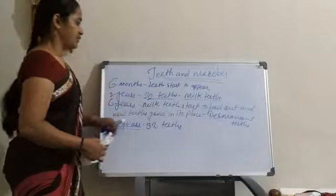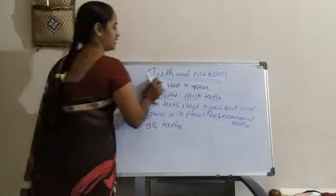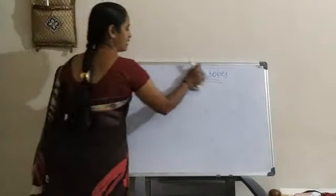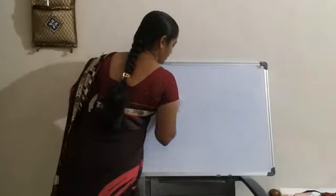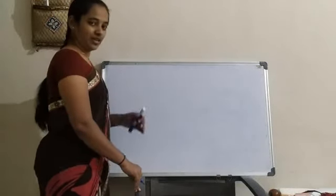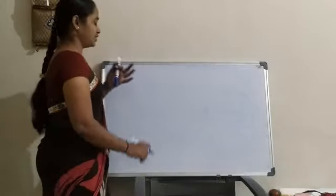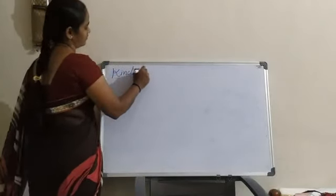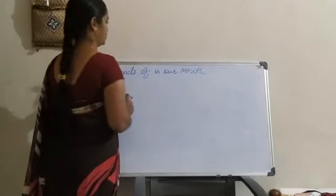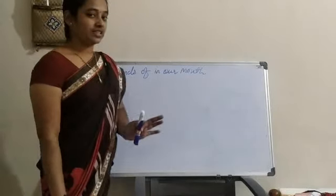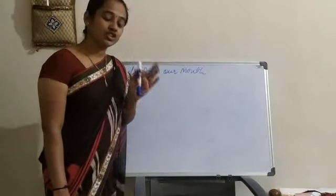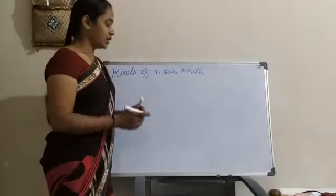After that, we will see the types of teeth. As we know, we eat different kinds of food — some are vegetarian, some are not vegetarian. Depending upon the kind of food we eat, there are 4 types of teeth in our mouth. As I told you, 32 teeth are there in an adult person, and all 32 teeth are not the same. They have different structures and different shapes, dependent on their function.